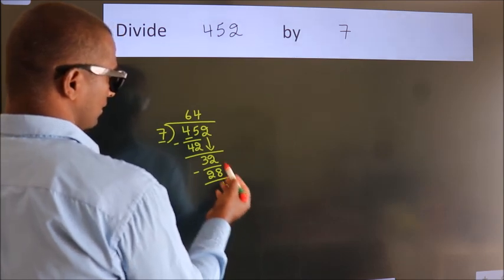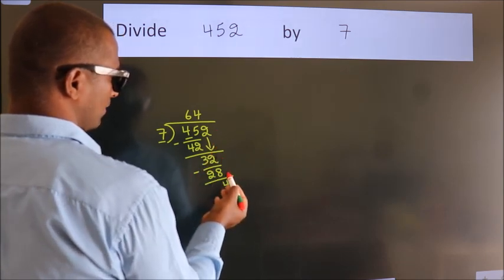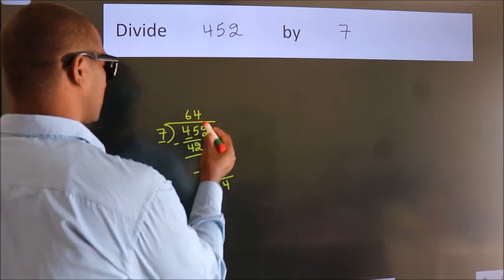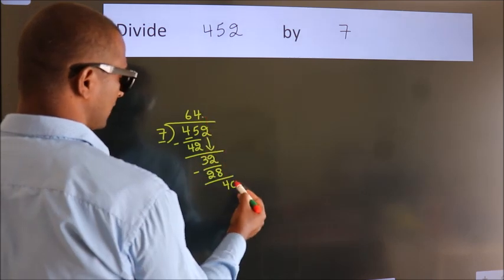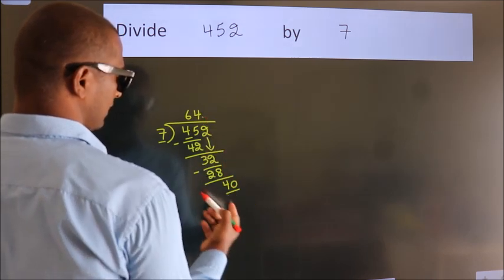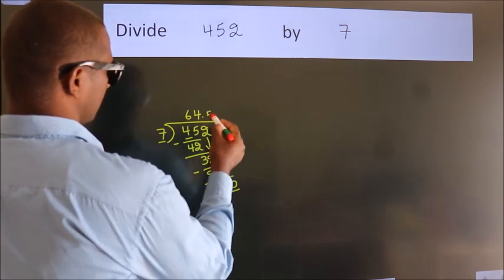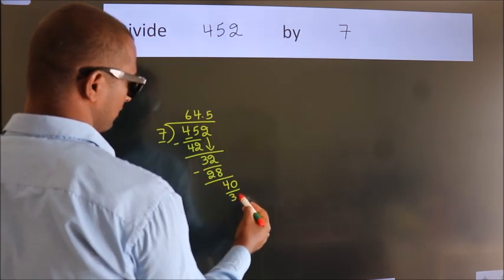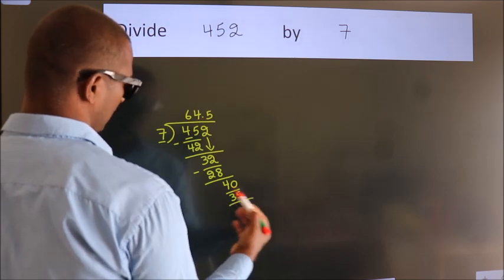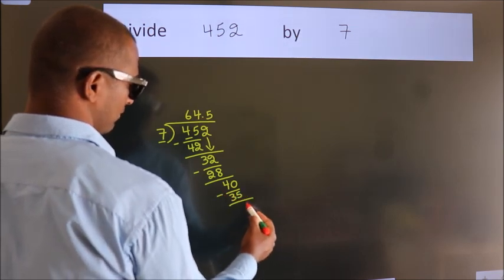After this, no more numbers to bring it down. So what we do is put a dot and take 0, giving us 40. A number close to 40 in the 7 table is 7 times 5, which is 35. Now we subtract. We get 5.